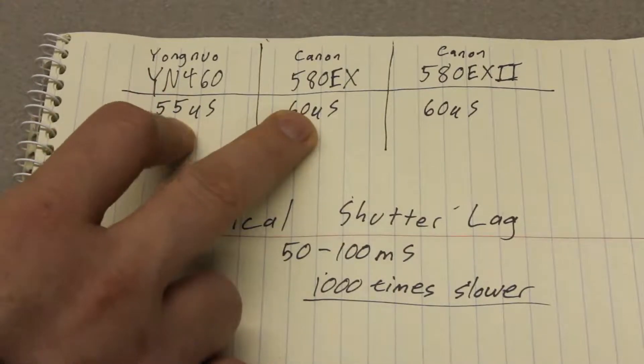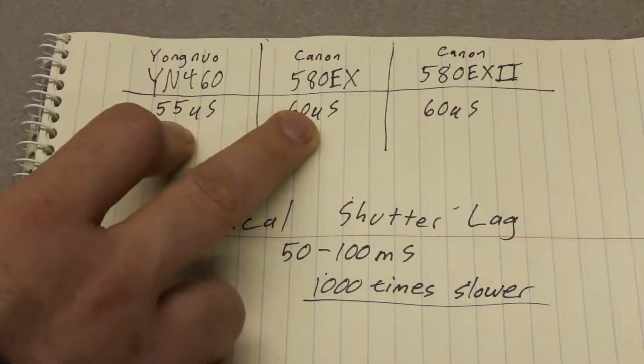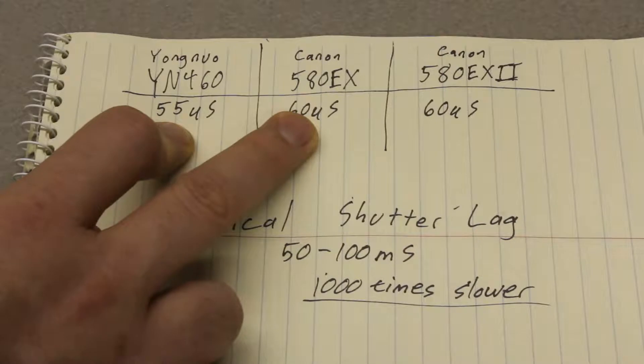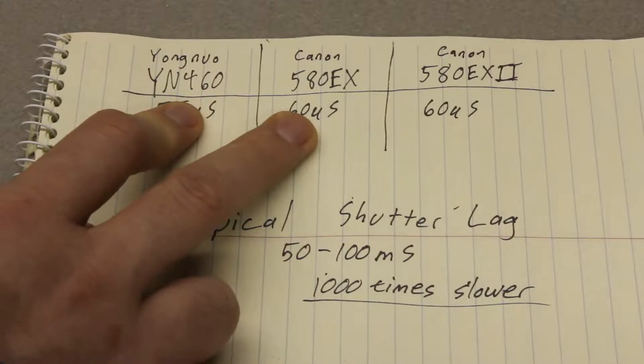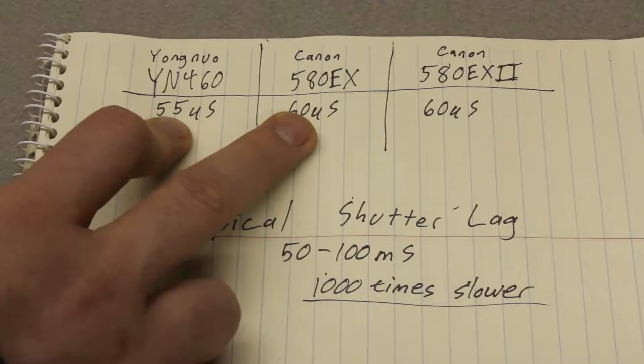And this actually points out that if you're doing high speed photography and you really want all of your flashes triggering at the exact same time, it's probably best to go with a bunch of flashes of the same type if you're using multiple flashes. Otherwise you're going to have slightly different triggering times for each.